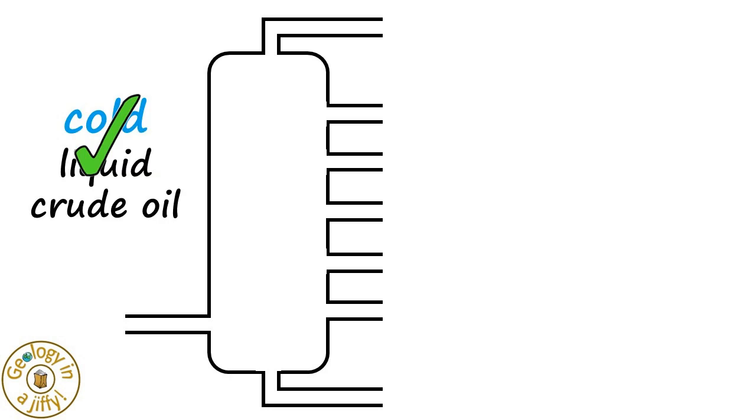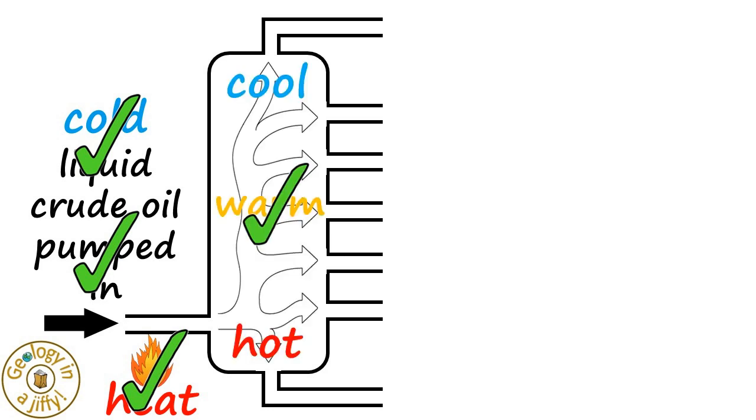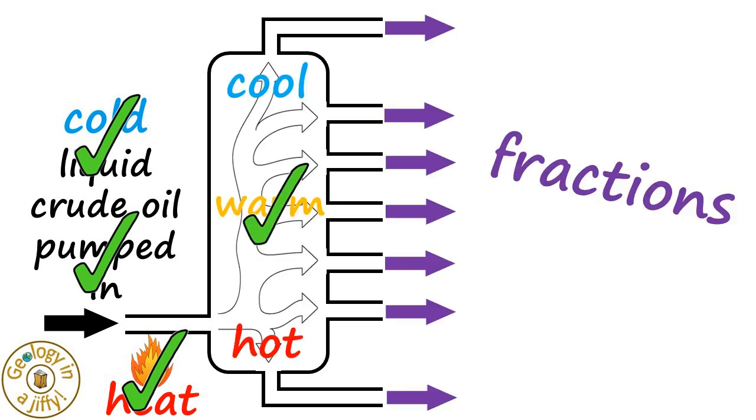Cold liquid crude oil is pumped in, which is strongly heated. The inside of the tower gets cooler towards the top of it, giving us the fractions.